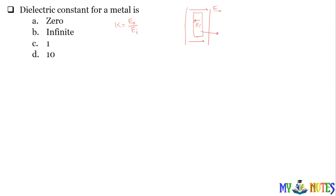But if you have a conductor, then the internal electric field inside the conductor is zero. If internal electric field is zero, then k equals E_external divided by E_internal, and with zero in the denominator, the answer is infinity. So k ki value kya ho jayegi? Infinity ho jayegi.